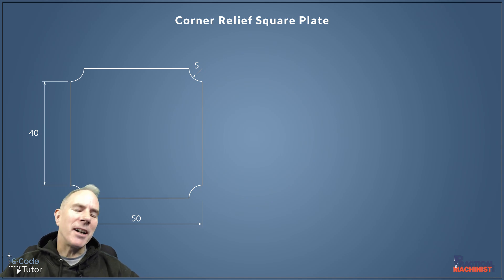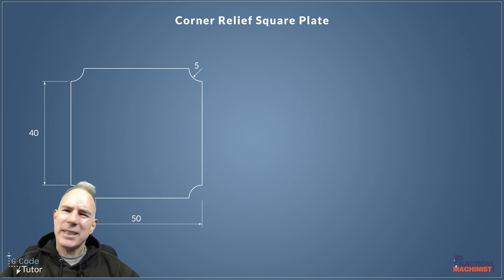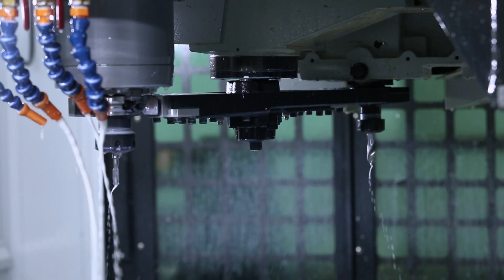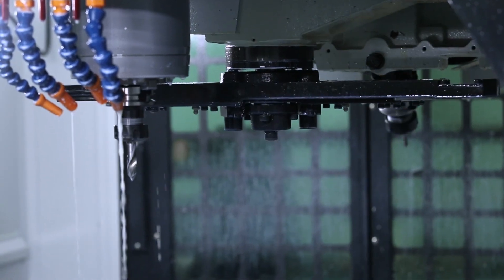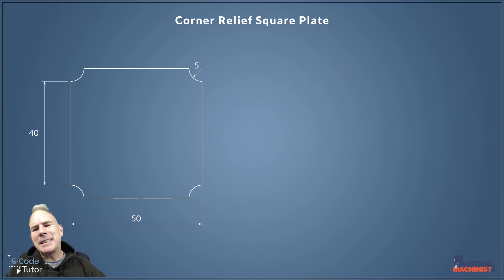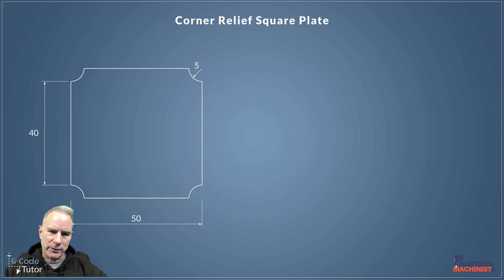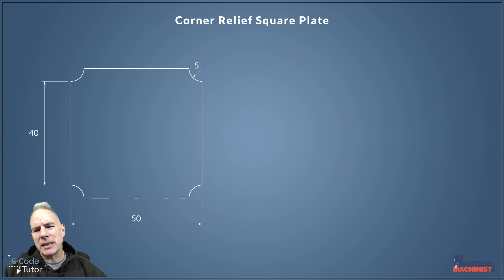Hello, my name is Mark and I am G-Code Tutor, and I'm here with Practical Machinist to look at a G-Code program where we can do female corner radiuses on a square plate. I've had this question pop up in my inbox a few times and also seen it asked on social media, so I'm going to write a very basic G-Code program to explain how we do that.